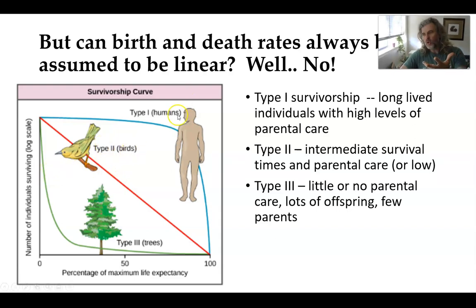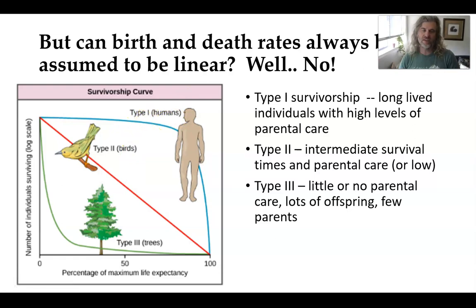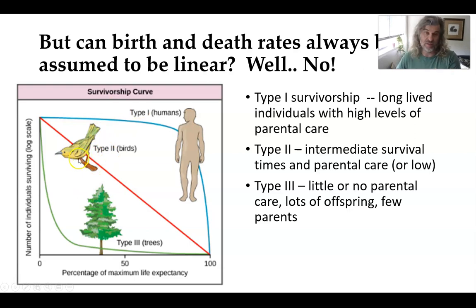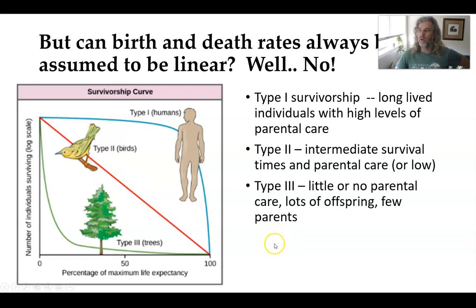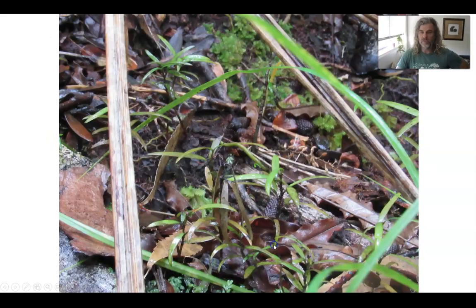There are two other types of survivorship you may know. Type I is humans — there's a tremendous investment into offspring and high survivorship of offspring. We just don't have very many offspring compared to say a redwood or something really long-lived like that. Birds and many other organisms are Type II — they're sort of in between, linear over time. Type III is the one that's really relevant to us here.